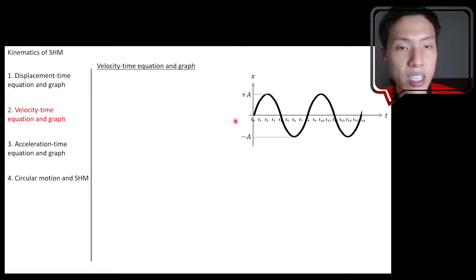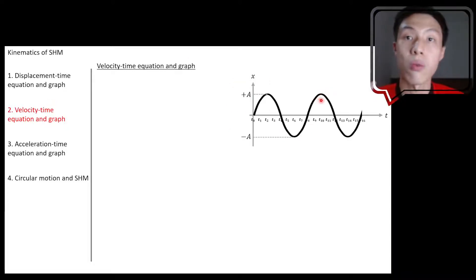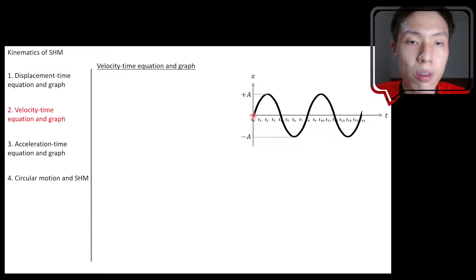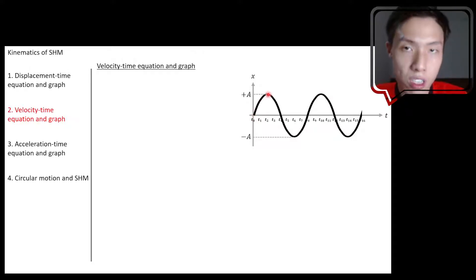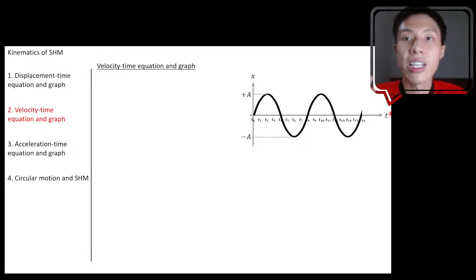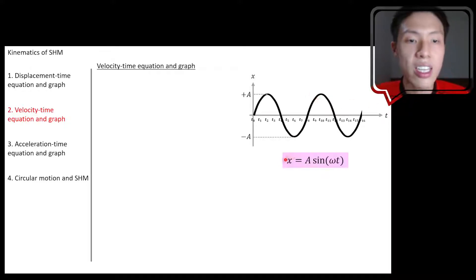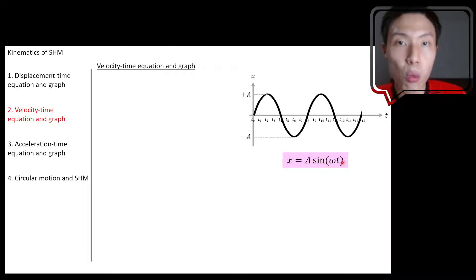This is the oscillation we'll see most in our matriculation syllabus. The oscillation starts from the equilibrium position, moves towards a positive maximum displacement, then continues its oscillation like this. This is the most common type, and the equation to describe this kind of oscillation is x equals to A sine omega t.